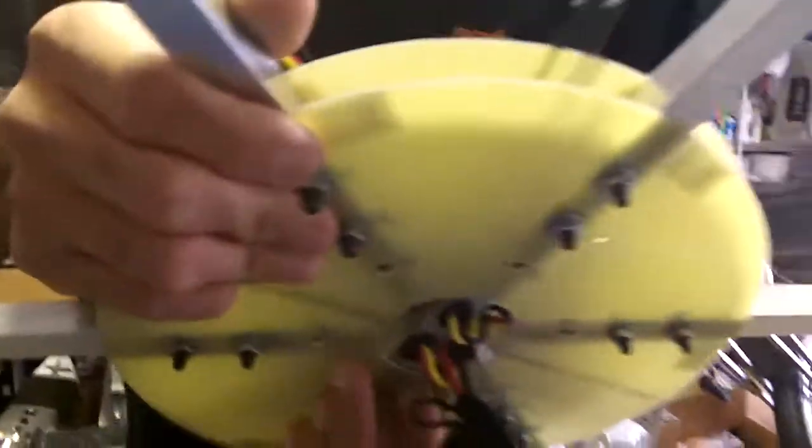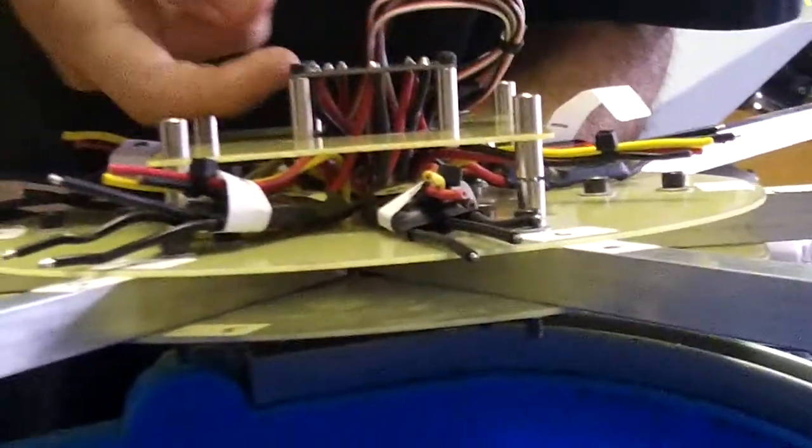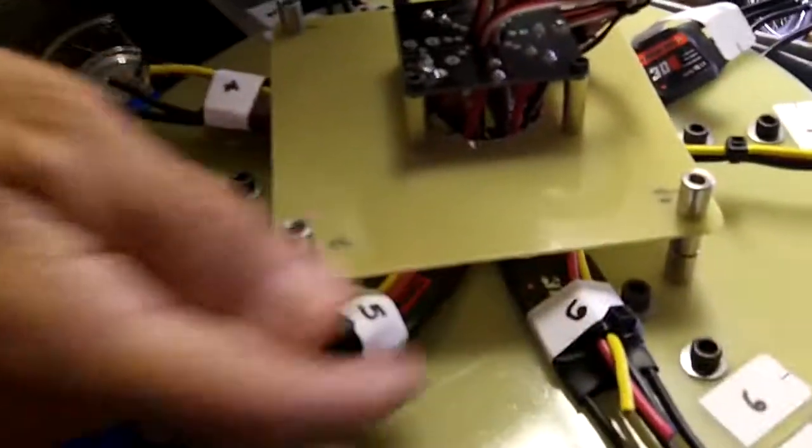You can see the cables go right into the power board, and then the power board also has each one of the speed controllers for each one of the motors right in there, right under here.